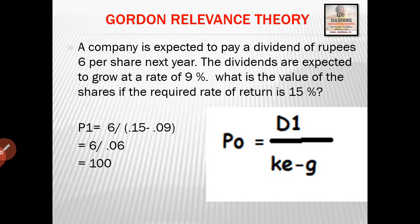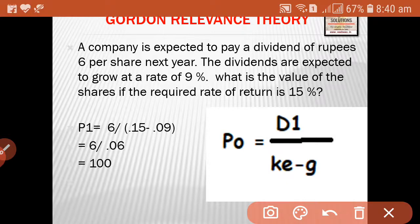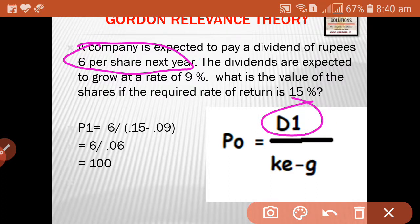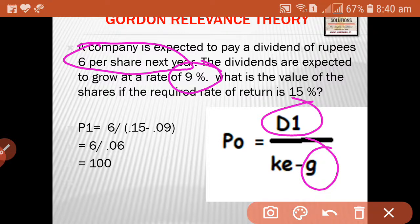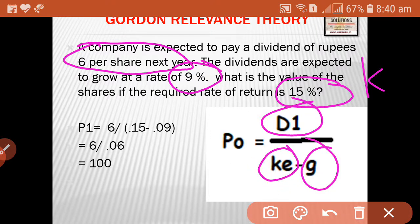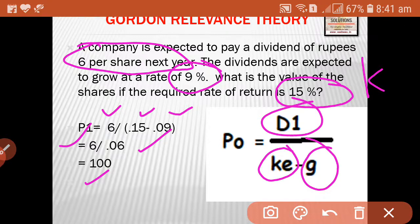Another example: A company is expected to pay a dividend of Rs. 6 per share next year. The dividends are expected to grow at a rate of 9%. What is the value of the share if the required rate of return is 15%? The required rate of return means KE, the cost of equity. So P0 = 6 / (0.15 - 0.09) = 6 / 0.06 = Rs. 100.